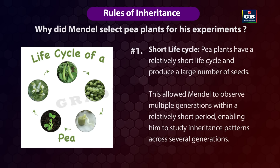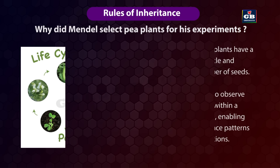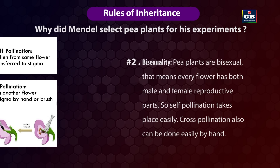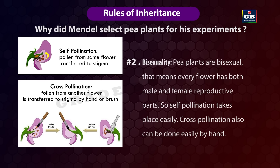First, pea plants have a relatively short life cycle and produce a large number of seeds, allowing Mendel to observe multiple generations within a short period and study inheritance patterns across several generations. Second, pea plants are bisexual — every flower has both male and female reproductive parts — so self-pollination takes place easily, and cross-pollination can also be done easily by hand.